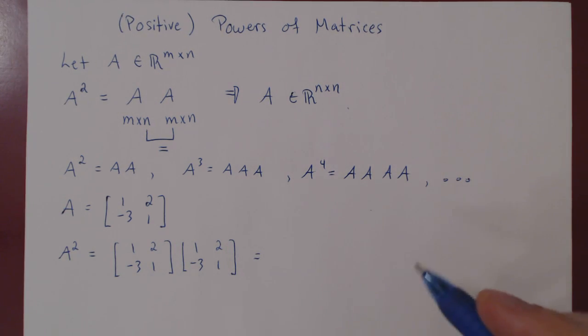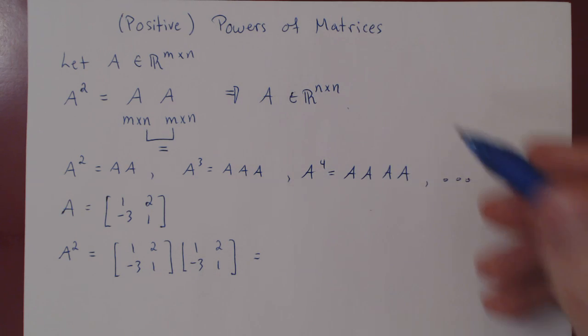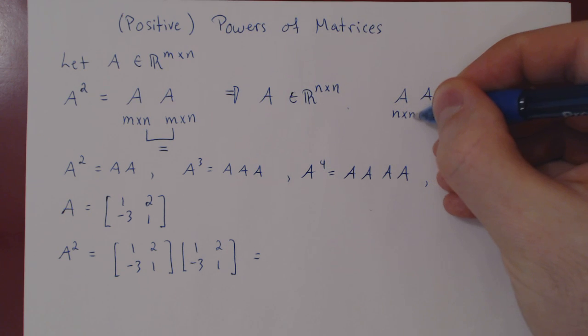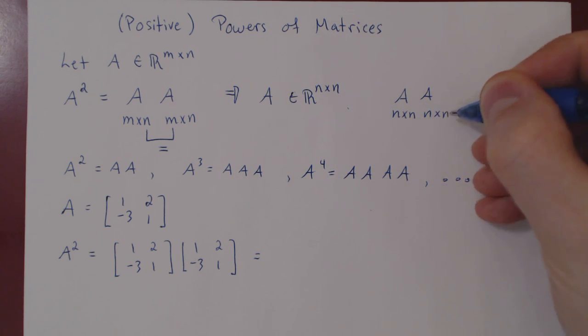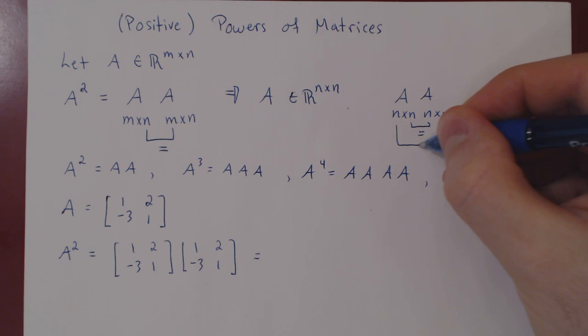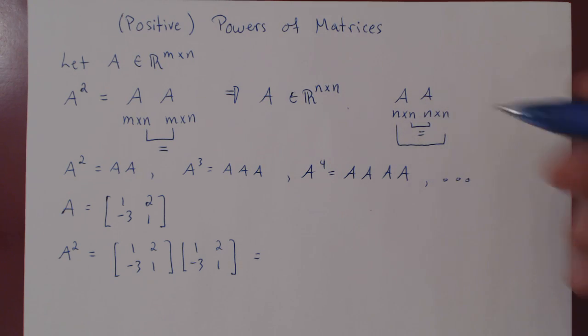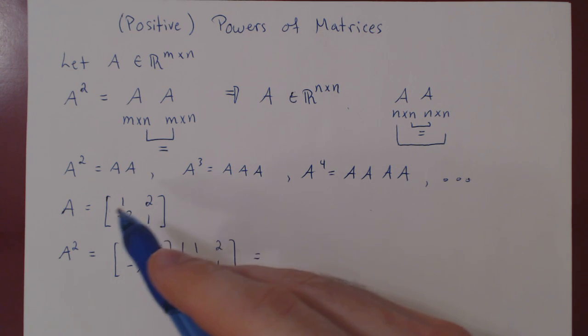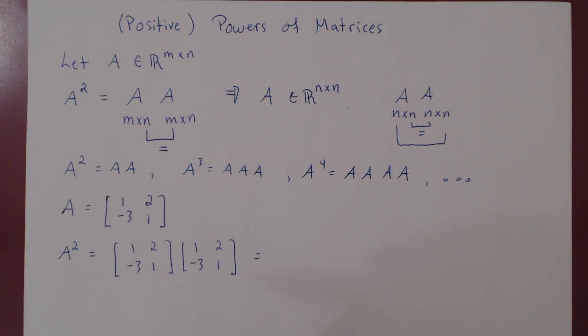And notice that if A is an n by n matrix, and you multiply A with itself, A being a square matrix, the result will also be a square matrix of the same size, n by n. So here A is 2 by 2, so any positive integer power of A will always be a 2 by 2 matrix.